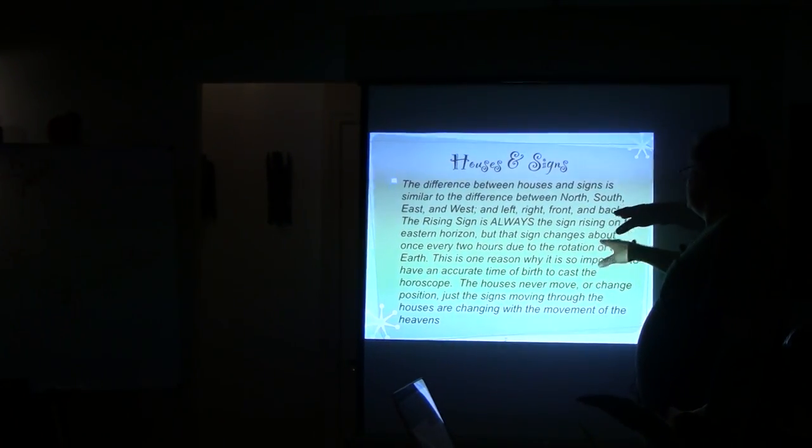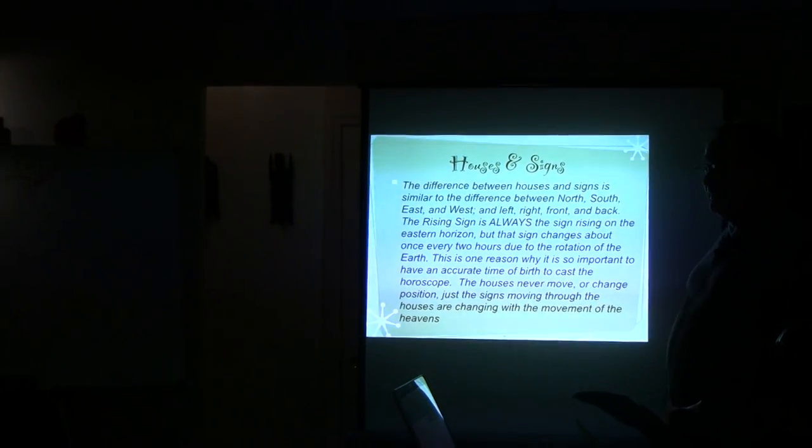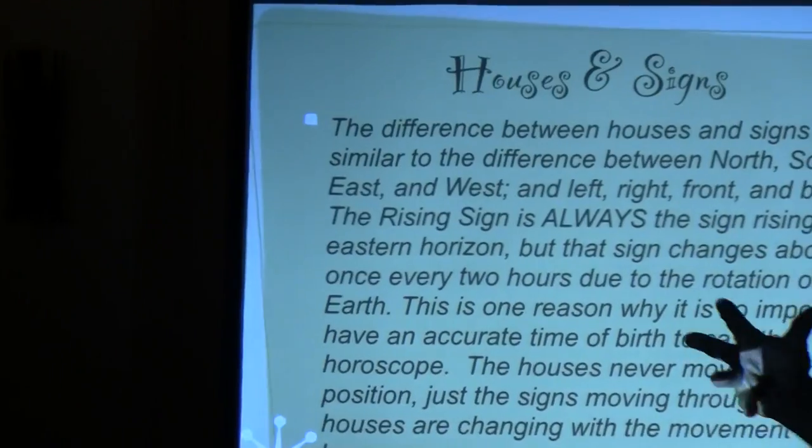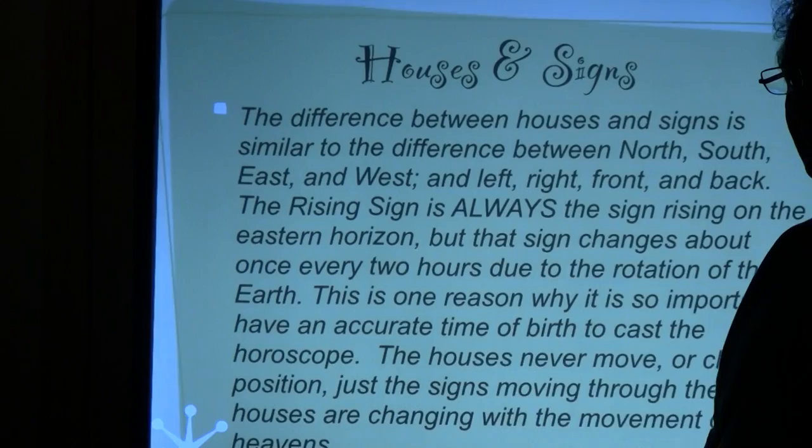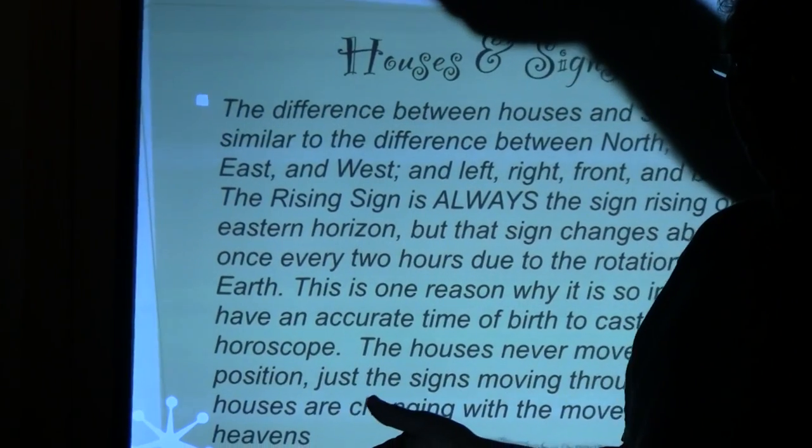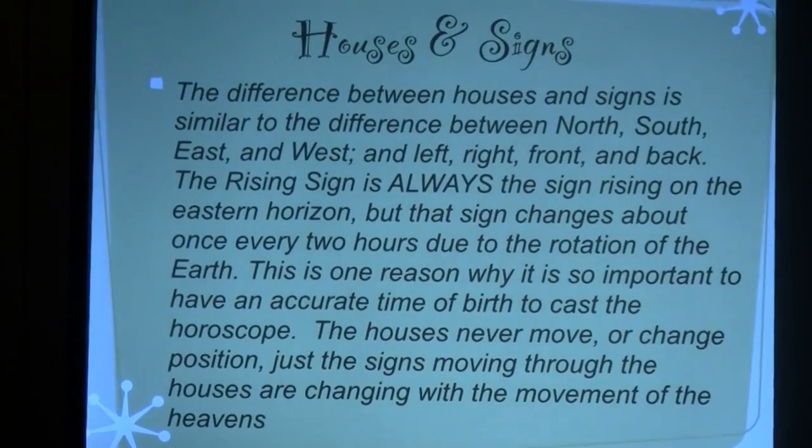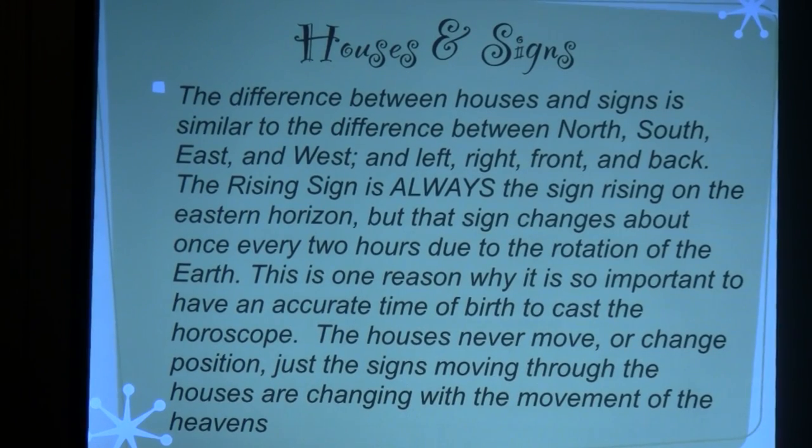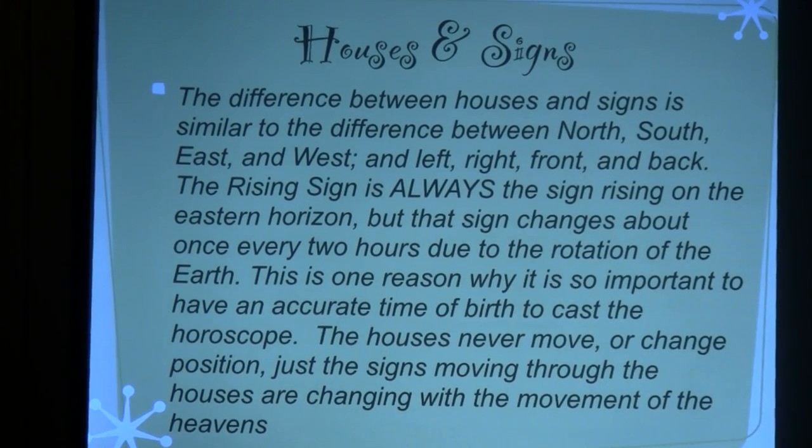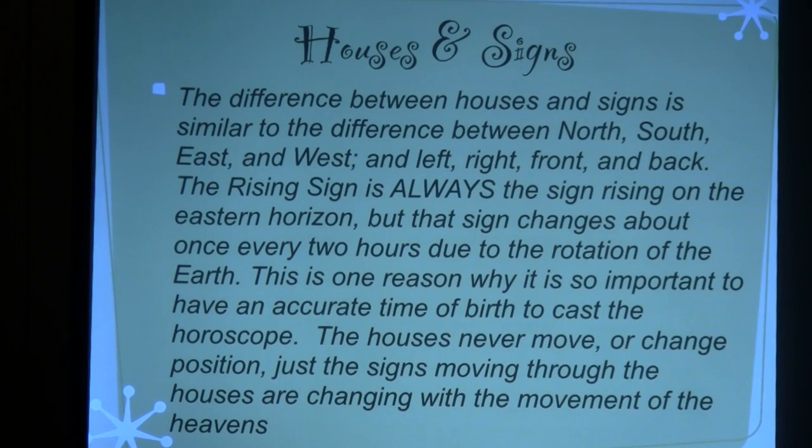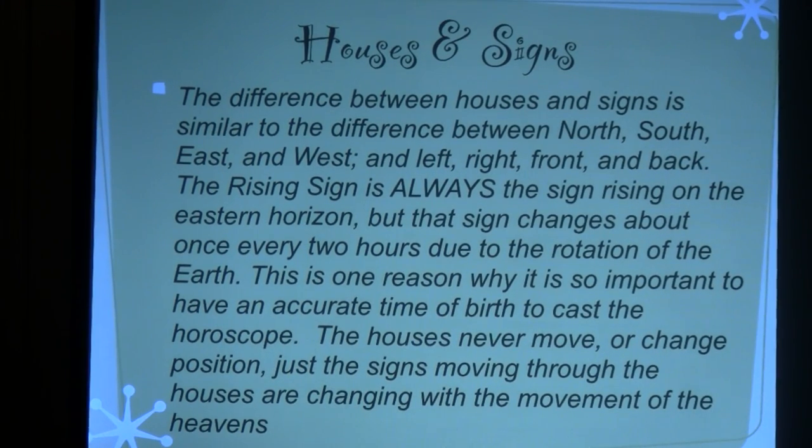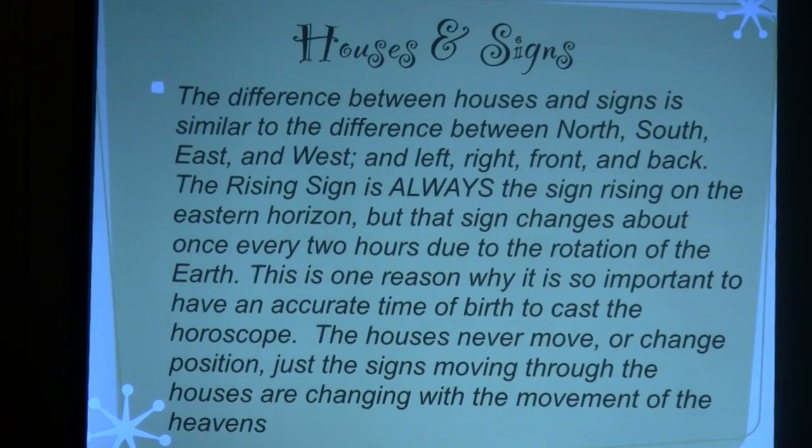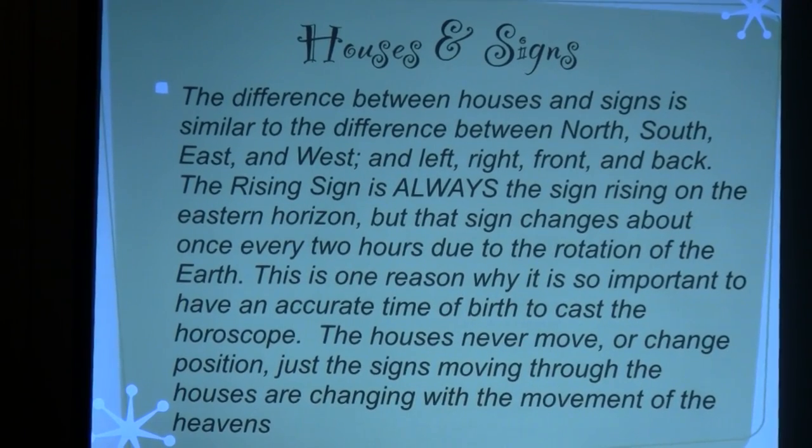The rising sign is always a sign rising on the eastern horizon. People will say, if you ask, you talk to somebody in astrology, they'll say three things. Where's your sun? Where's your moon? What's your rising sign? Rising sign is your ascendant, right here. What's rising in the east when you're born? It doesn't mean the sun's there, it means what's the sign on the cusp.